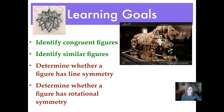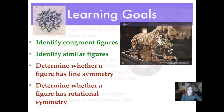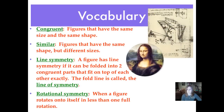You can see what it looks like in real life, and you can look up his designs to see what it looked like on paper — it's actually pretty incredible. Our individual lesson learning goals are to identify congruent figures, identify similar figures, determine whether a figure has line symmetry — you probably did that in fourth grade — and determine whether a figure has rotational symmetry, which I believe is new for you this year. There's the Mona Lisa — that's probably his most famous painting.